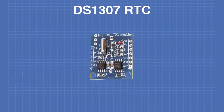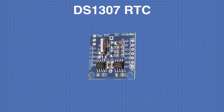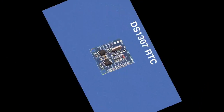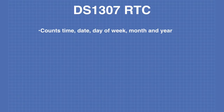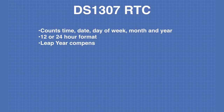Let's take a look at the DS1307 real-time clock chip. The DS1307 counts time, date, day of week, month, and year with accuracy down to one second. It can be used in 12 or 24-hour format. The device has leap year compensation up to the year 2100, which incidentally is not a leap year.